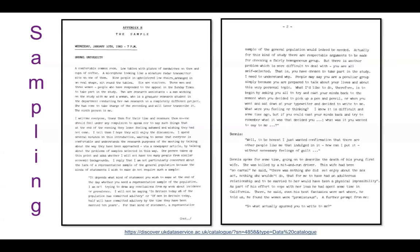So Annette Lawson's study, Adultery: An Analysis of Love and Betrayal — another project conducted a few decades ago, in the 1980s — was aiming to explore the extremely taboo topic at the time of adultery. As such, it was really hard for her to recruit participants. Lawson chose to put out a call for participants in a newspaper, but it created an arguably biased sample of mostly white, middle-class women who were responding to her call for participants.